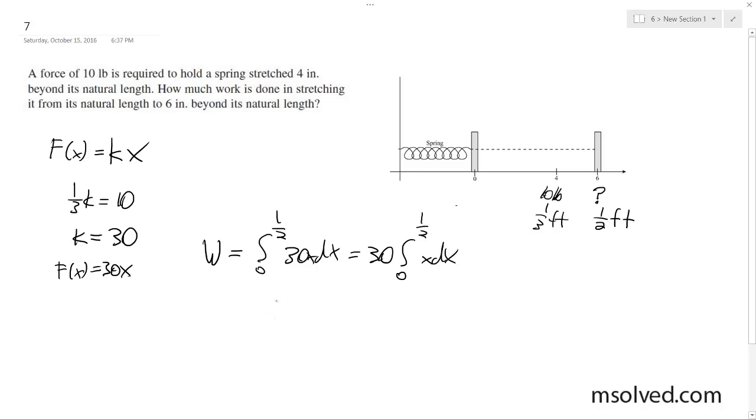and this ends up being thirty. Integrated, this is x squared. That makes sense. x squared over two, from zero to one-half, we end up with thirty times one-fourth squared times one-half, so one-eighth.